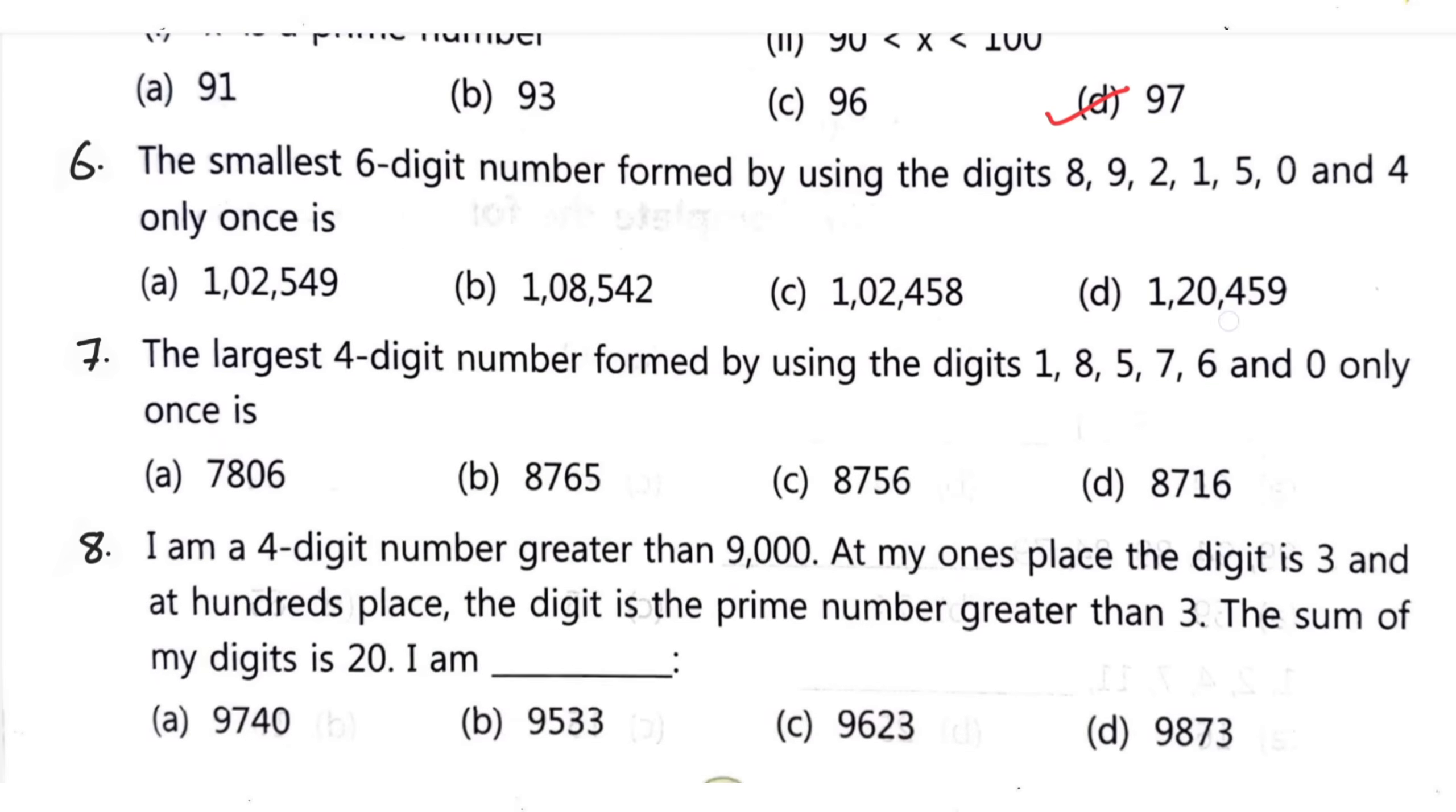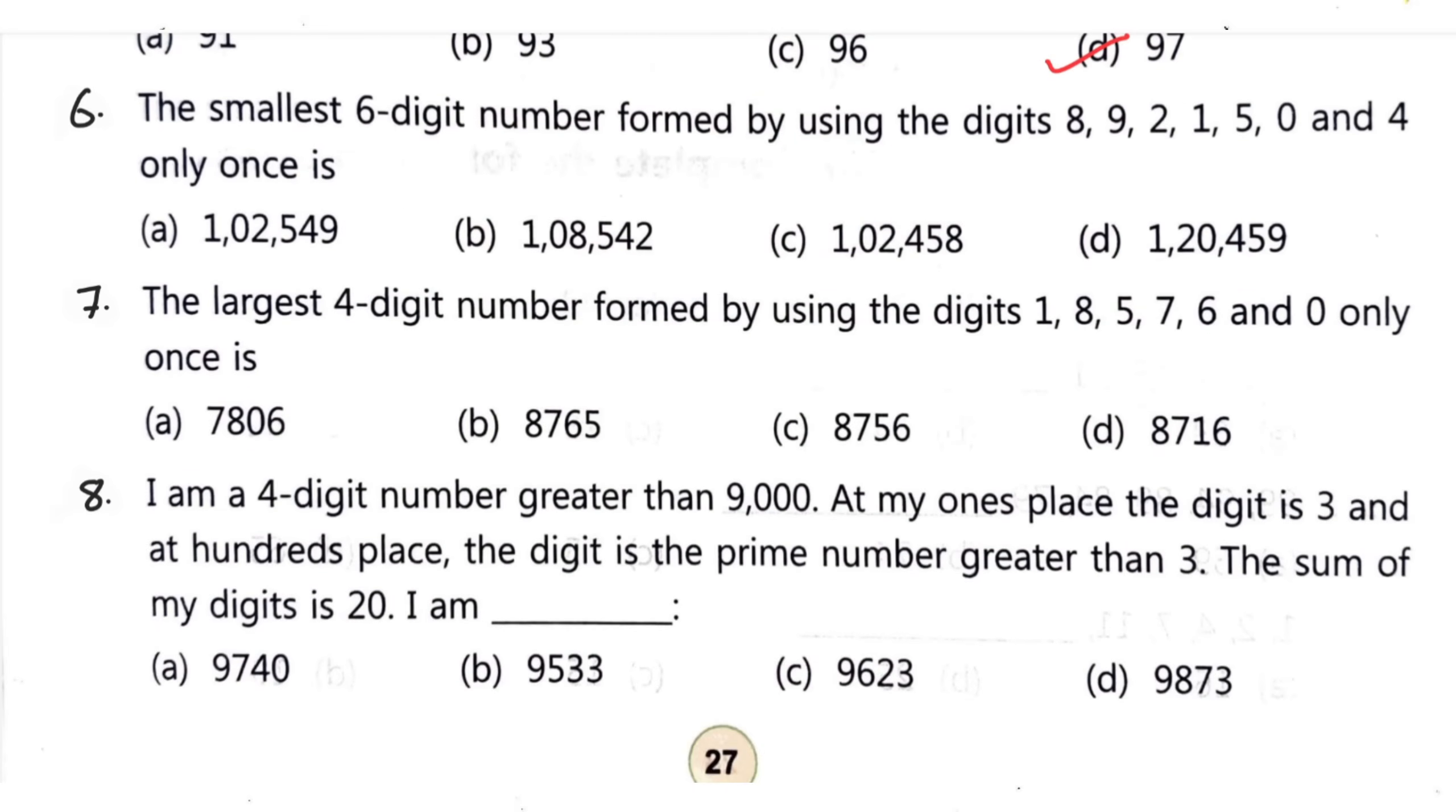Question number 6: the smallest 6-digit number formed by using digits 8, 9, 2, 1, 5, 0 and 4 only once is. Your correct option is option C, 102458. Question number 7: largest 4-digit number formed by the digit 1, 8, 5, 7, 6 and 0 only once. Correct option is option B, 8765.